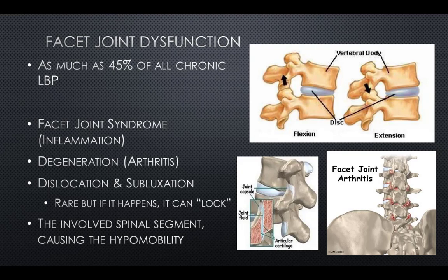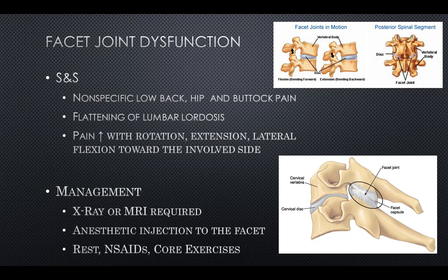Facet joint dysfunction accounts for nearly 45% of all chronic low back pain. It is a broad term that may include facet joint syndrome or inflammation, arthritis or degeneration of the facet joints, or dislocation and subluxation causing joint locking and hypomobility. Signs and symptoms include nonspecific low back, hip, or buttock pain, flattening of the lumbar lordosis curve, and increased pain with rotation, extension, and lateral flexion towards the involved side. Management includes x-ray or MRI, anesthetic injection to the facet joint, rest, NSAIDs, and core strengthening exercises.